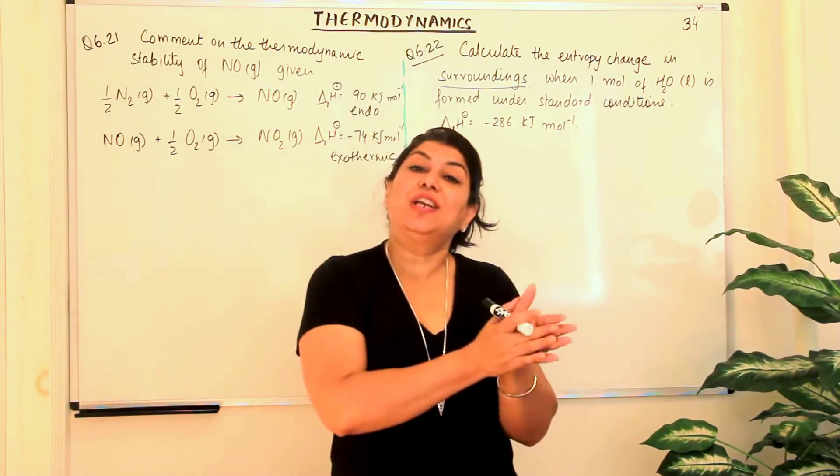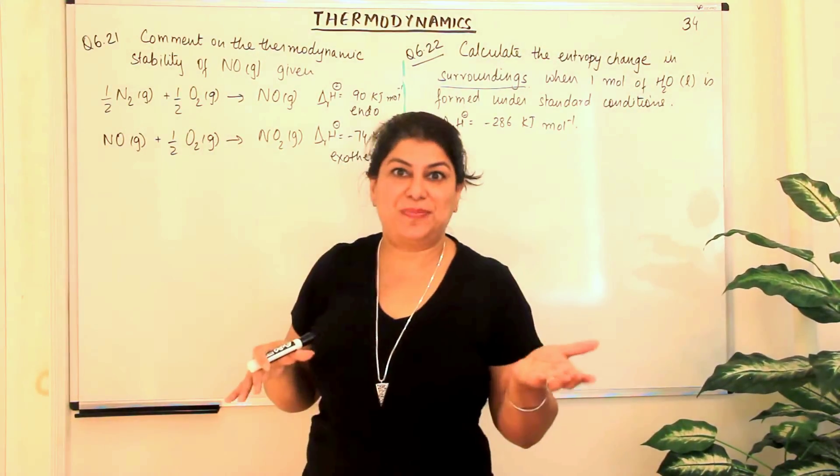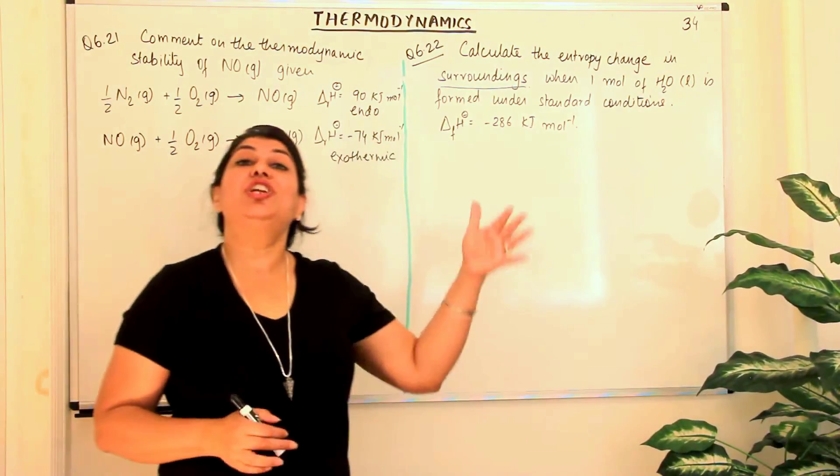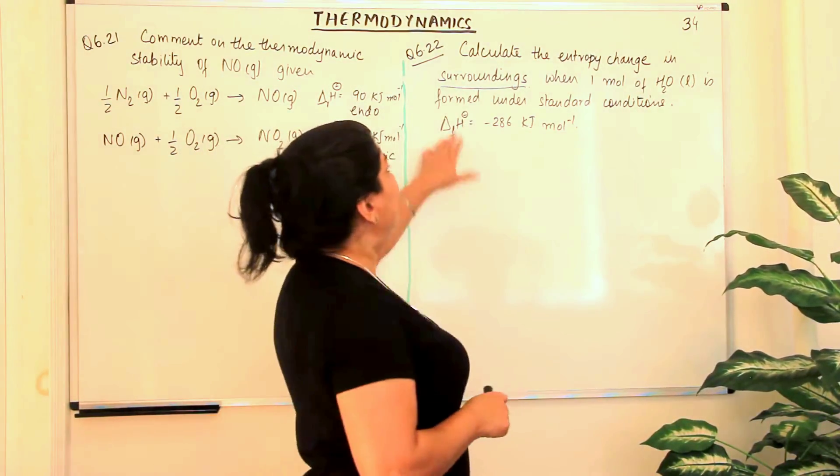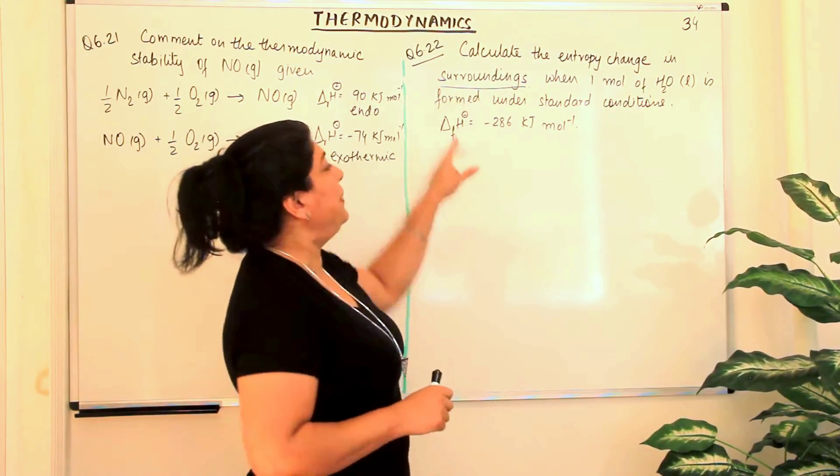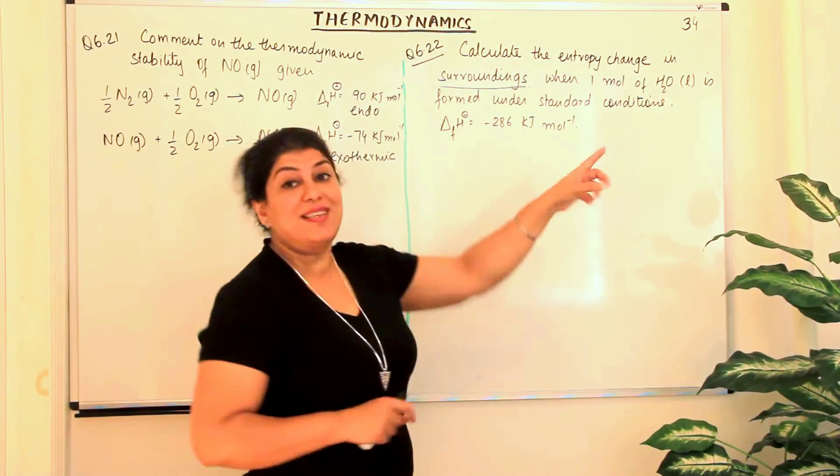So what would be the change in enthalpy of the surroundings? The surroundings lost that much energy. If this is the energy gained by the system, then that is the energy lost by the surrounding. So when we are interested in the surroundings, we should be interested in the enthalpy not of the system, because we have been given the enthalpy of formation of the system.